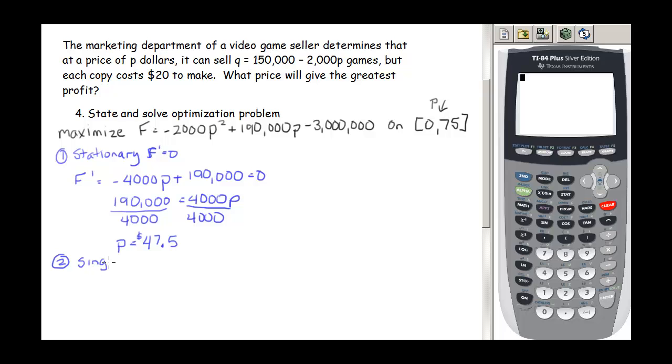So going back to our usual plan, the next thing we look for is those singular points, and remember those occur where that derivative does not exist. And here is my derivative right here. Remember when you're looking for singular points, you're looking for where this doesn't make sense, where there's a value that you can't plug in here. But this is a linear function. Any value is going to be safe to plug in, so there are no singular points. The next thing we look at are those endpoints, and so we have 2 - we have P equals 0 and P equals 75.